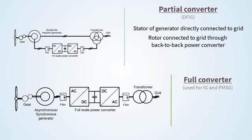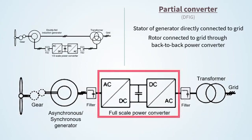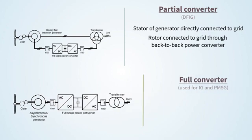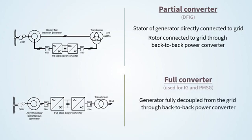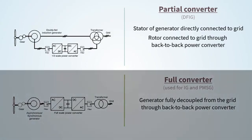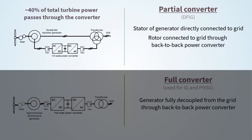And the full converter topology used for IG and PMSG permanent magnet synchronous generator, where the generator is fully decoupled from the grid through a back-to-back power converter. In the partial converter topology, only approximately 40% of the total turbine power passes through the converter, which allows a lower capital cost. This topology offers a power rating that goes from 1.5 to 6 megawatt.